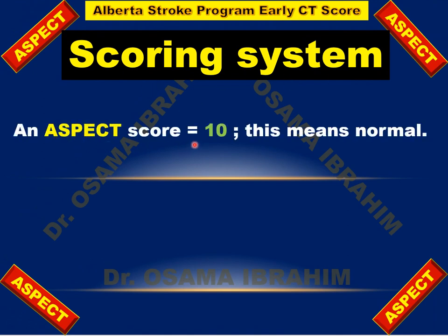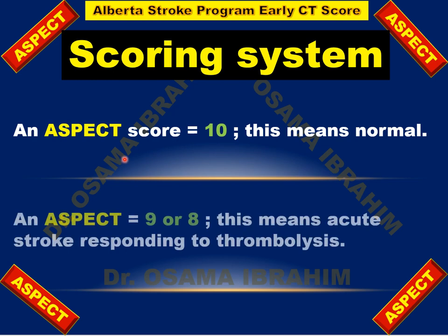An ASPECTS score equal to 10 means normal. An ASPECTS score of 9 or 8 means acute stroke responding to thrombolysis. That is the importance of the ASPECTS score — to detect and select patients who can respond to thrombolysis when the score is 8 or 9.